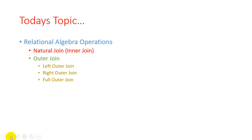In outer join there are three different types known as left outer join, right outer join, and full outer join. As per the GTU exam point of view, it is a really important concept to understand how natural join and outer join work. We will study each type with examples, syntax notation, and demonstrations. Please watch the complete video to understand how natural join and outer join work.